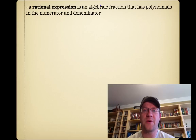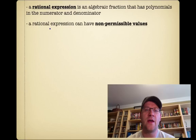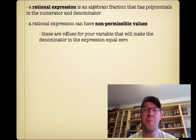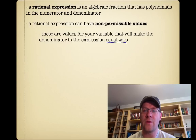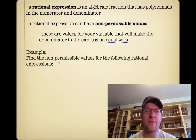A rational expression is an algebraic fraction that has polynomials in the numerator and denominator, and a rational expression can have non-permissible values. Non-permissible values are values for your variable that will make the denominator in the expression equal zero, and we know that we cannot divide by zero — that's why these are non-permissible values.